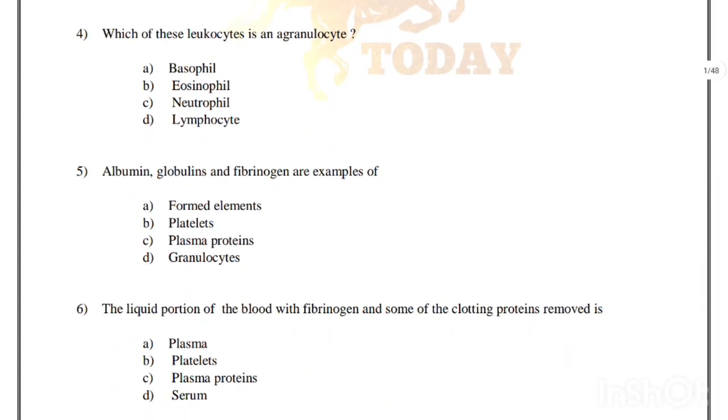Which of these leukocytes is an agranulocyte? Options: basophil, eosinophil, neutrophil, lymphocyte. Correct answer is option D, lymphocyte.